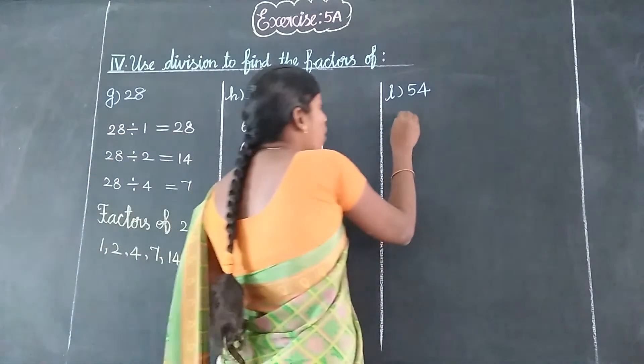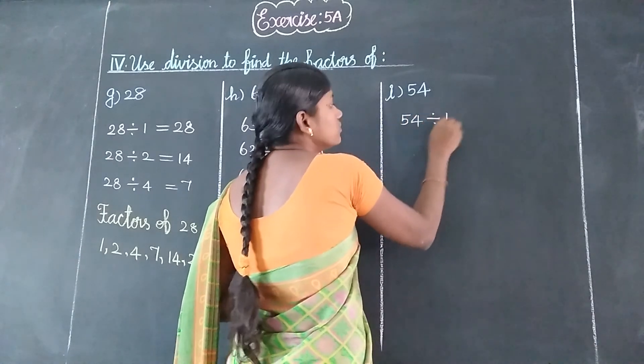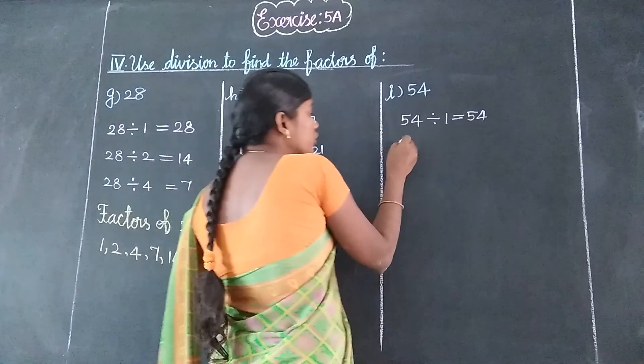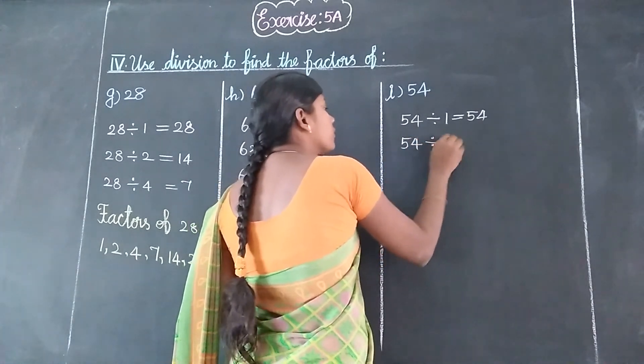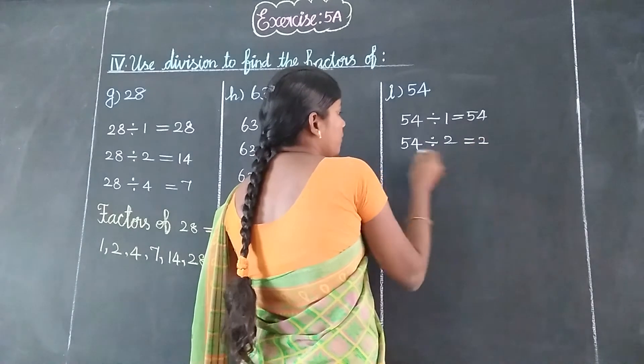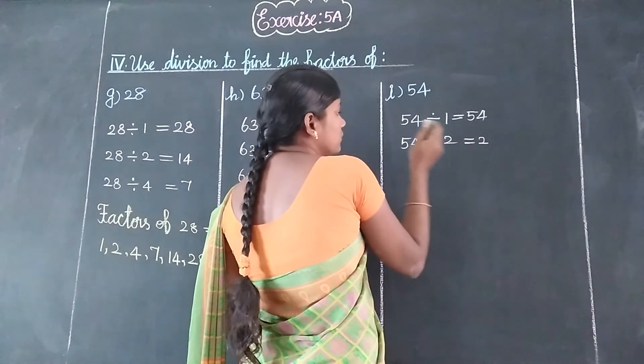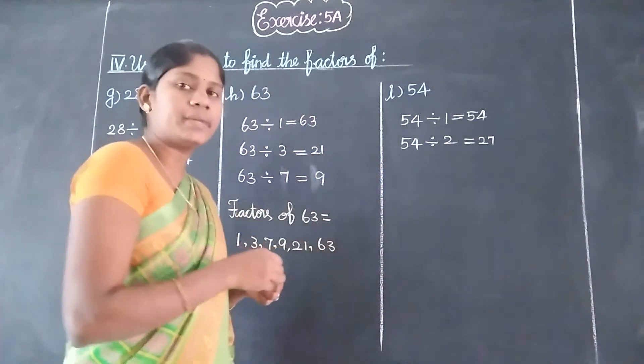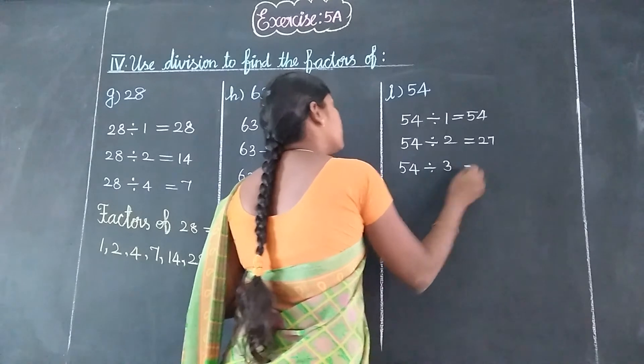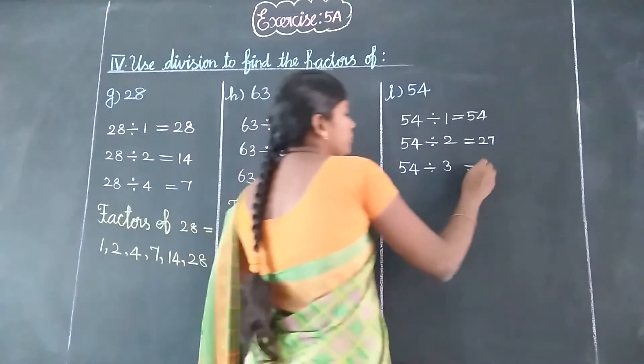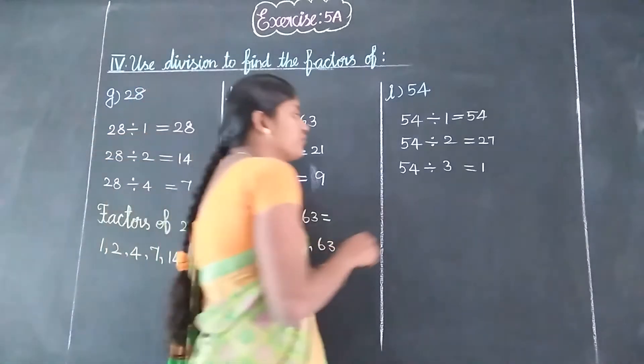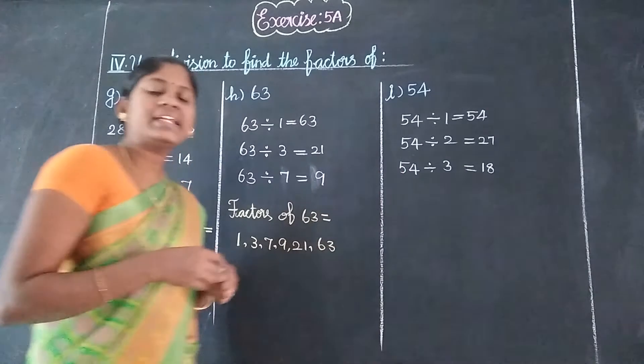Next is 54. 54 divided by 1 equals 54. Next, 2 table. How many 2s in 54? Twenty-seven 2s are 54. Next, 3 table. How many 3s in 5? One 3 is 3, balance 2. That's 24. Eight 3s are 24. So eighteen 3s are 54.